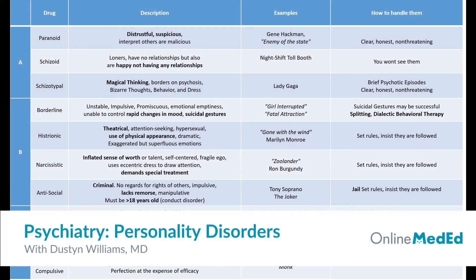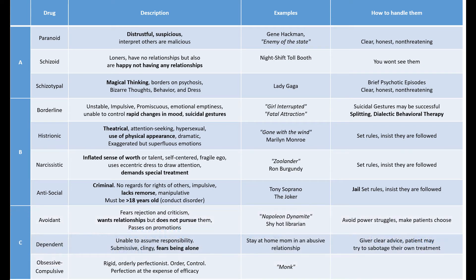Personality disorders are rigid, permanent, and maladaptive traits that define the way a person behaves. These traits become embedded early in adulthood and are completely egosyntonic. Because they are ingrained and egosyntonic, patients don't see them as a problem, and it is almost impossible to treat them because they don't want to change.